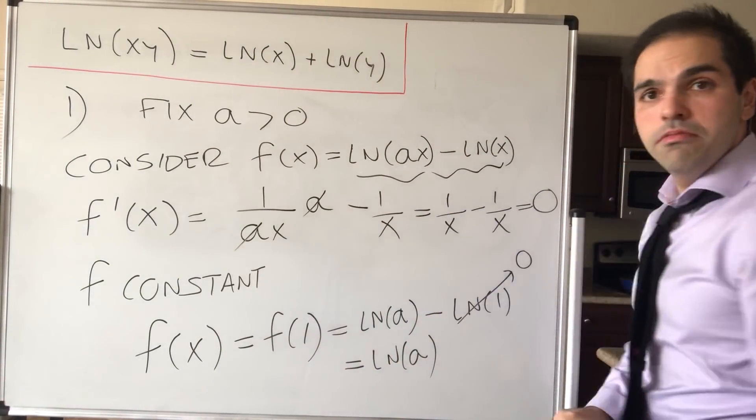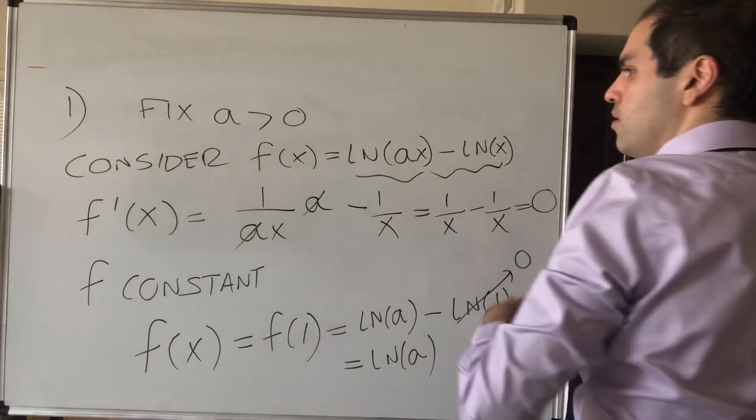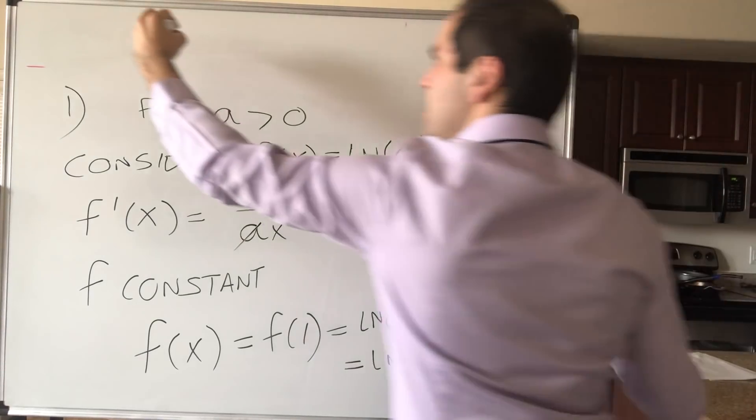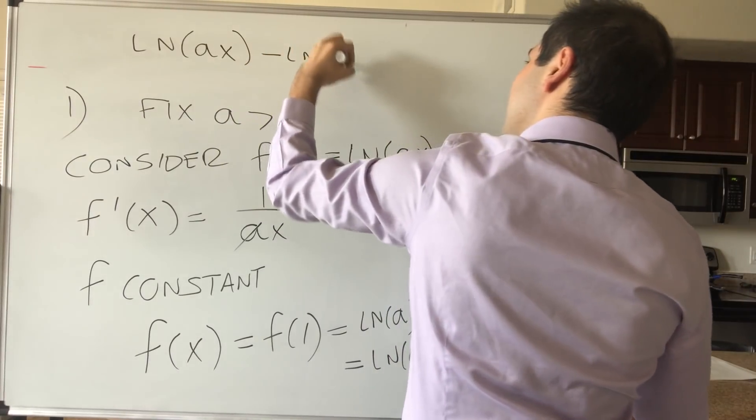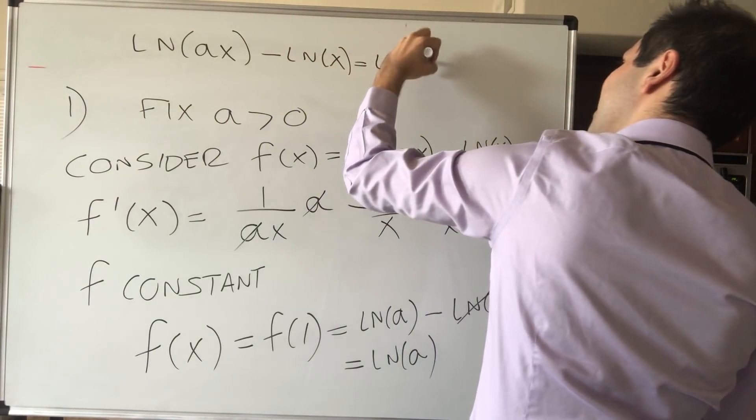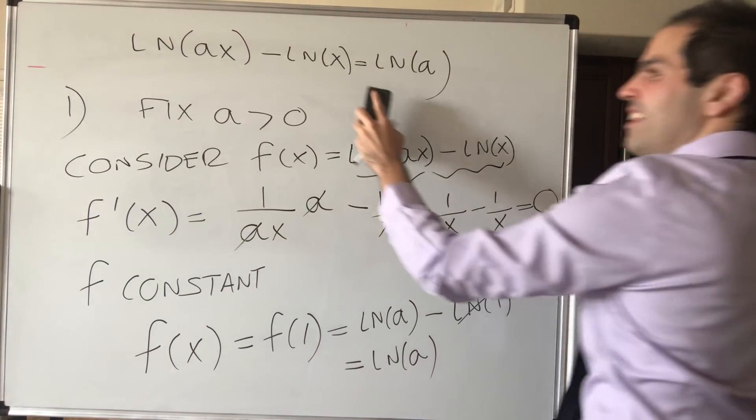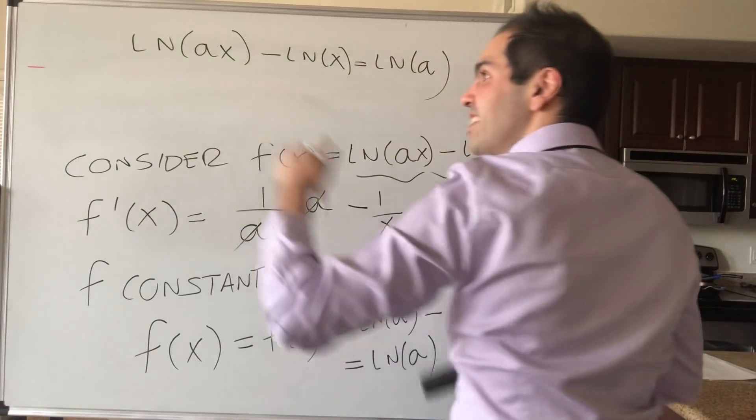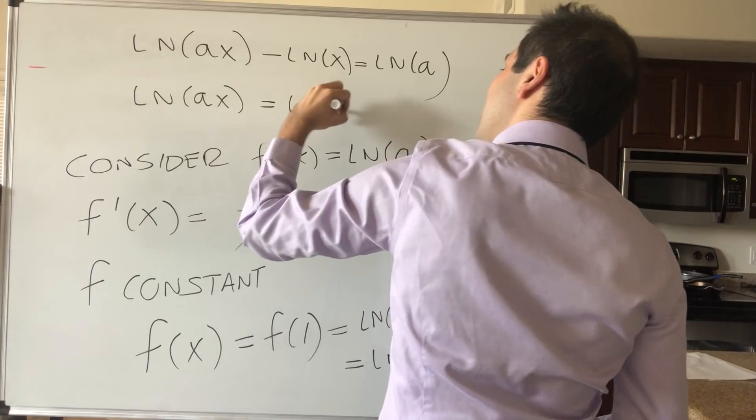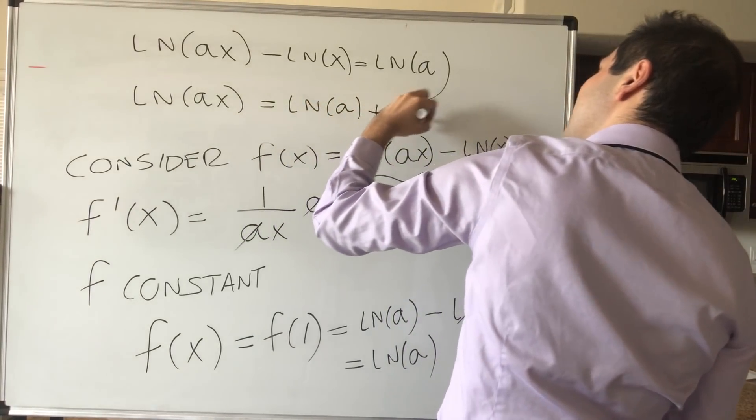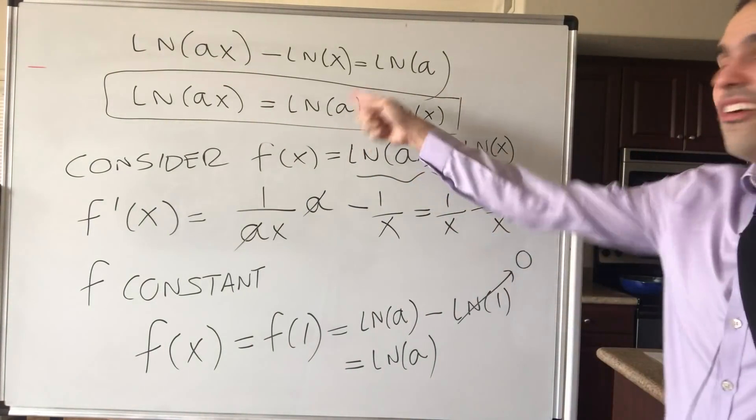So this function here is ln of a. So in other words, what we get is that ln of ax minus ln of x equals ln of a. And look what's so nice. So now if you solve for ln of ax, you then just get the following: ln of ax equals ln of a plus ln of x. How cool is that?